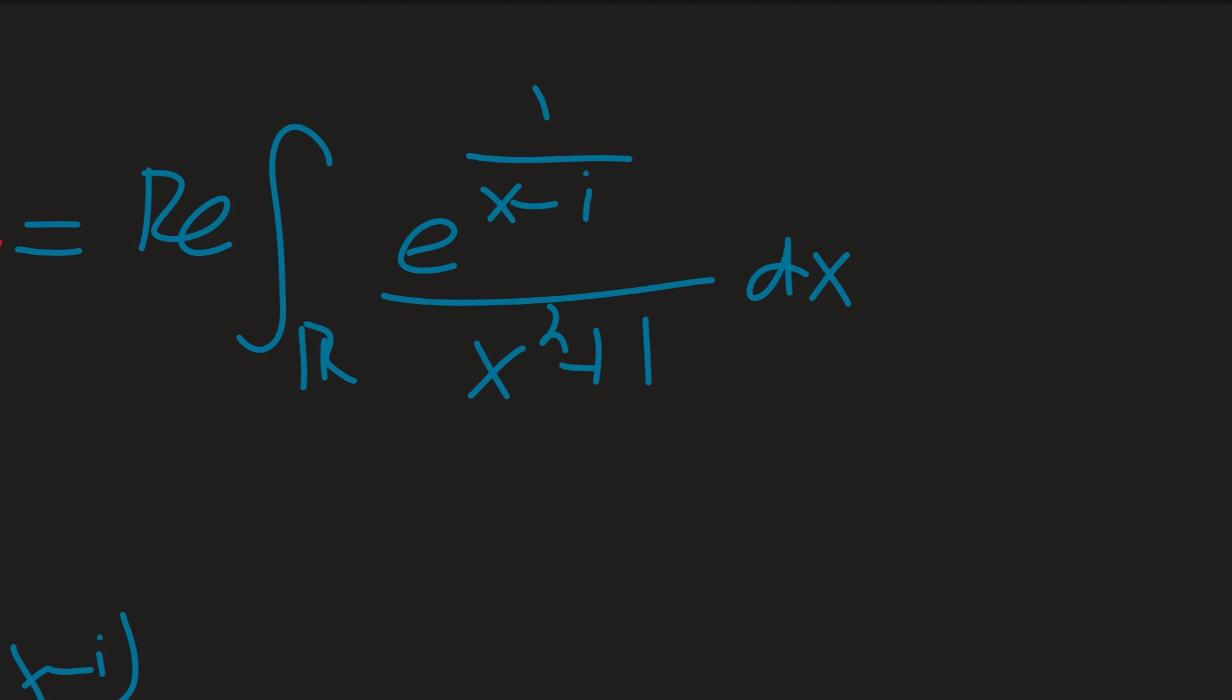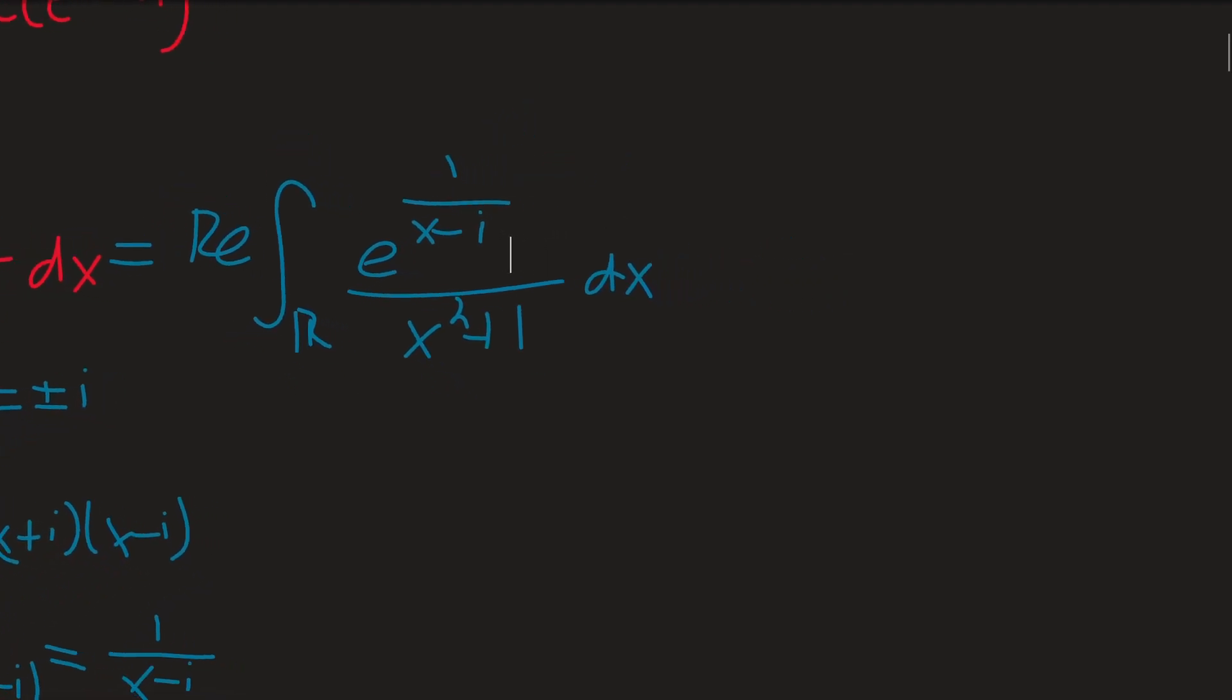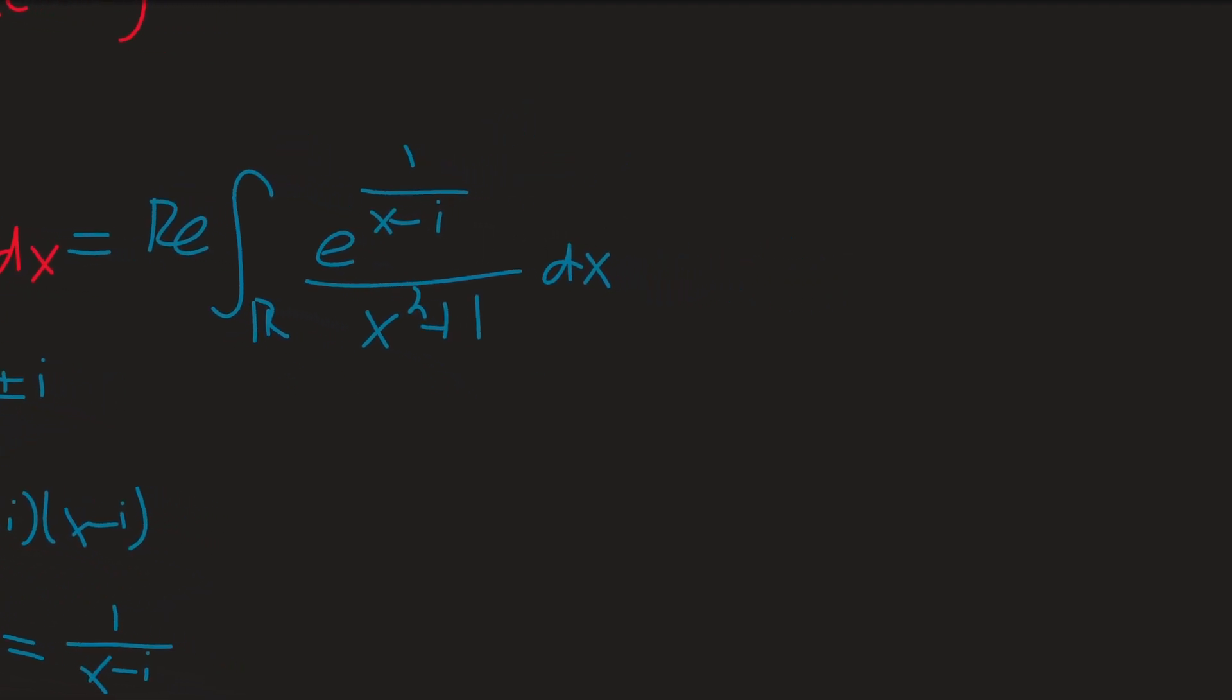So what we would do normally, say, in this instance, like if we just were to ignore that e term completely, what we would have is just, use complex analysis, it's just this normal semicircular contour where the top part is in the top half of the complex plane.